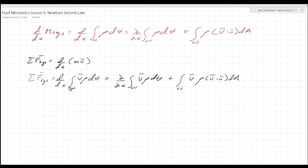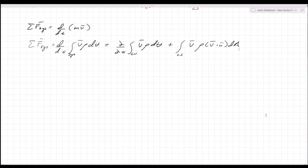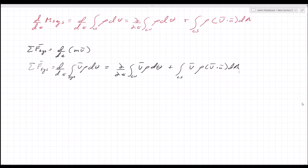So the sum of the forces on the system gives us the time rate of change of the linear momentum. The force equals the time rate of change of the linear momentum of the contents of the control volume plus the net rate of flow of linear momentum through the control surface — that is what this equation is telling you.